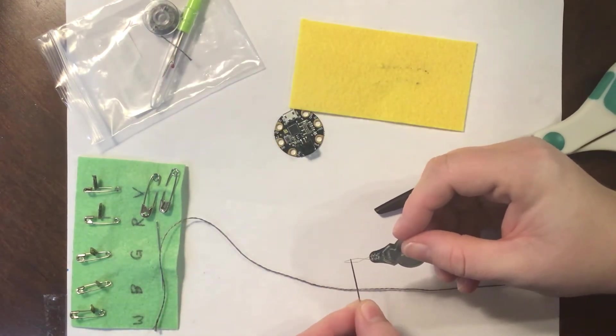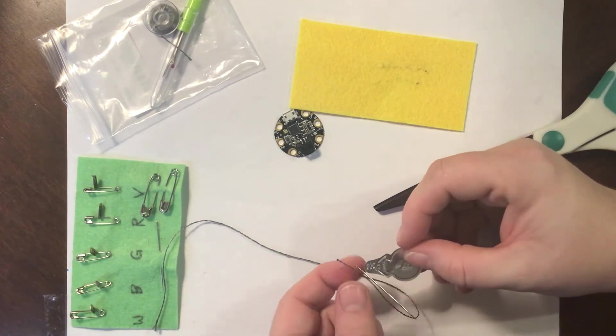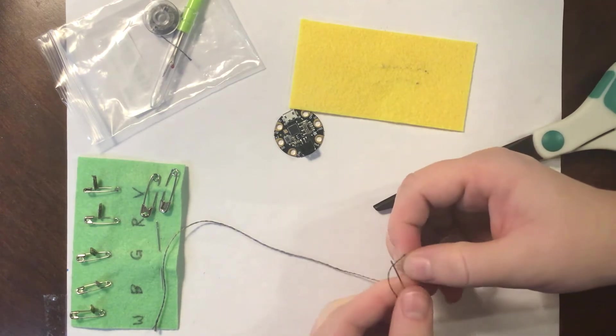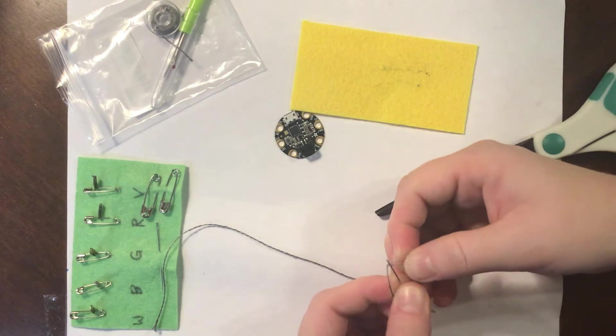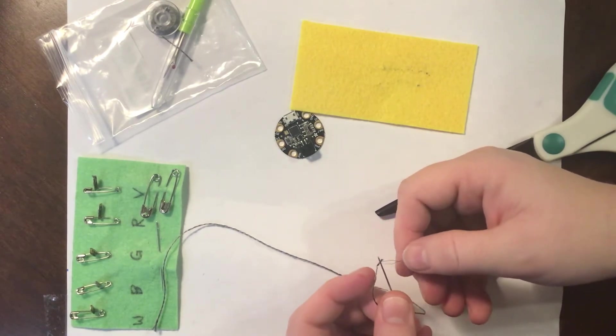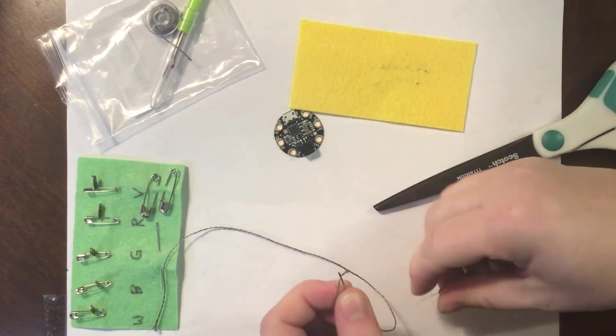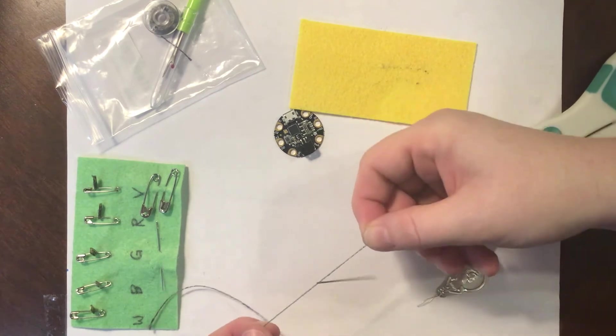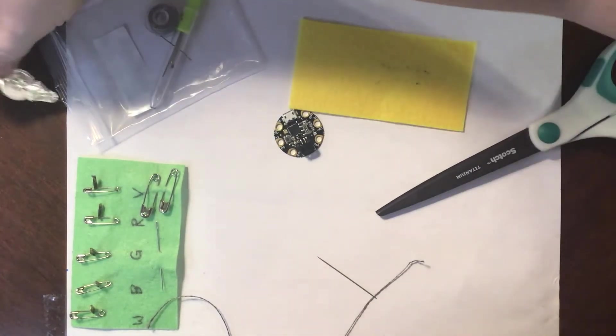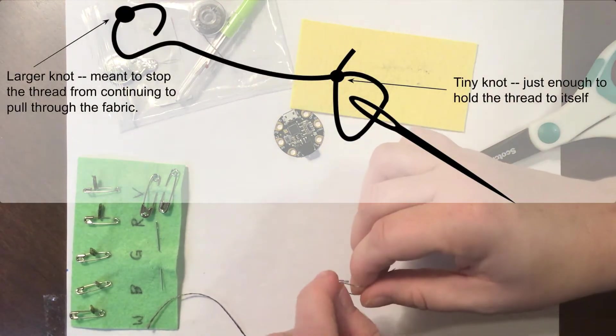Using the threader is really easy. Just put it straight through the eye of the needle, and then even a frayed thread will easily go through the threader. The threader itself might take a little bit of wiggling to get it back through the eye with that thread in it. But then once it's through, it's a little easier to tie off.